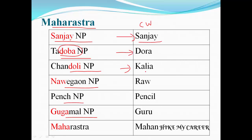Chandoli National Park code word is Kaliya. Doli means Kaliya — Doli rhymes with Kali. These characters are important in Cartoon Network — Dora and Kaliya. So Chandoli National Park code word is Kaliya.